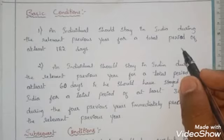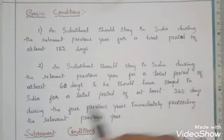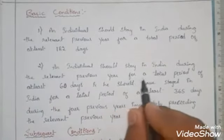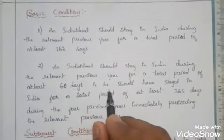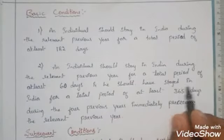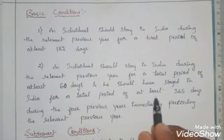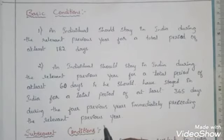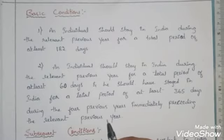The second basic condition is that an individual should stay in India during the relevant previous year for a total period of at least 60 days, and should have stayed in India for a total period of at least 365 days during the four previous years immediately preceding the relevant previous year. So an individual can stay for only up to 60 days in the previous year, but must stay for at least 365 days in the last four previous years.